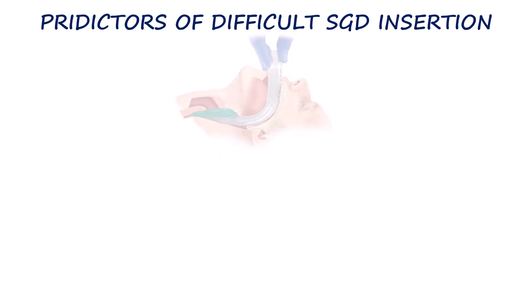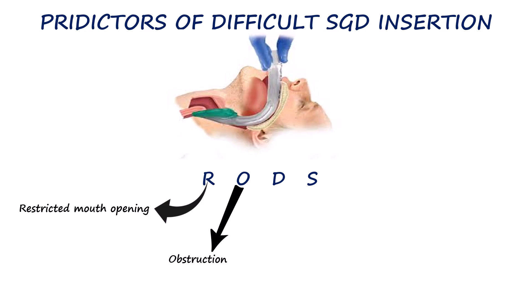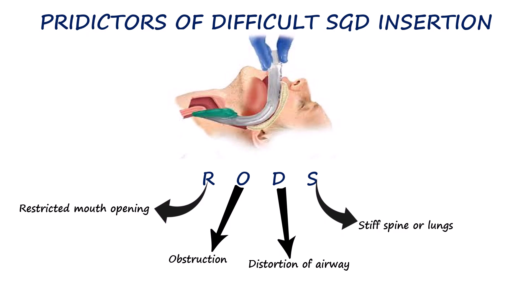To end the video, airway assessment also involves anticipating potential difficulties with backup techniques like supraglottic airway devices in case standard intubation fails. The RODS mnemonic helps guide this evaluation. R stands for restricted mouth opening, which can make device insertion challenging. O is for obstruction such as tumors, swelling, or foreign bodies. D refers to distorted airway anatomy including congenital anomalies, trauma, or previous surgery. S stands for stiff lungs or cervical spine, which may limit neck movement or lung compliance, complicating ventilation.